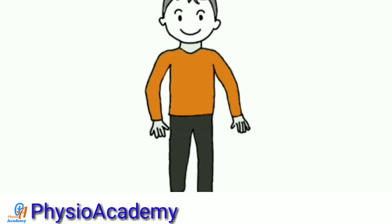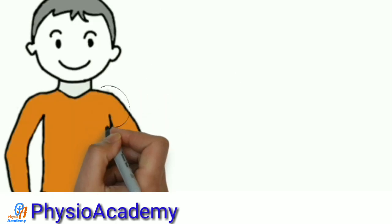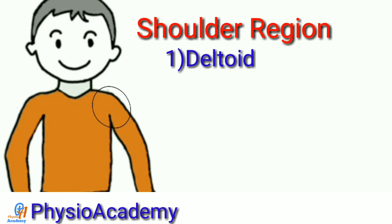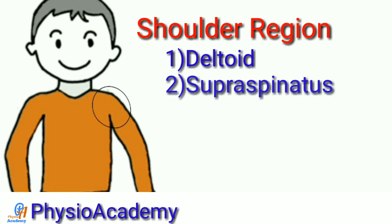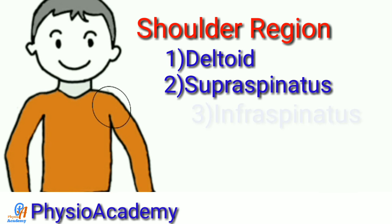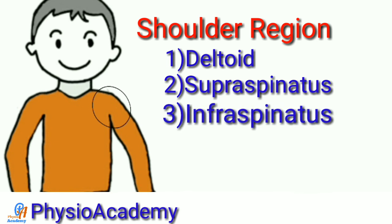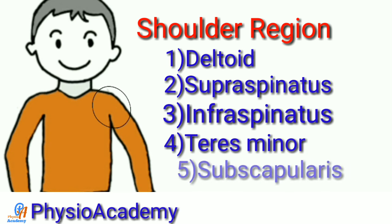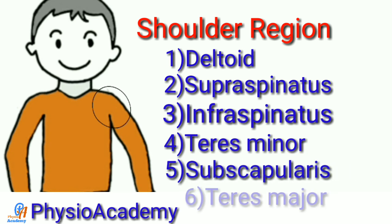Now we will see the muscles of the shoulder region. The first superficial muscle is deltoid. Then there are five other muscles in this region: supraspinatus, infraspinatus, teres minor, subscapularis, and teres major.